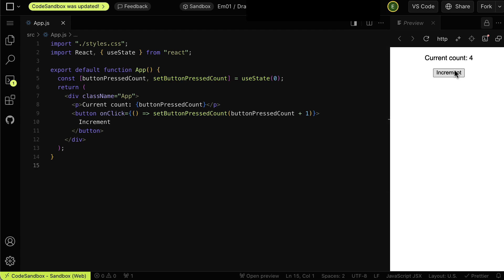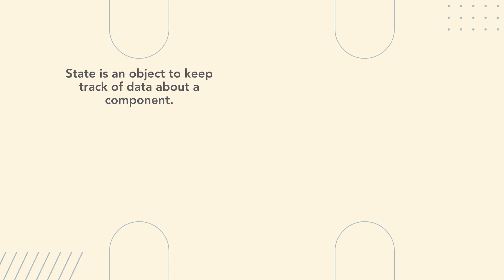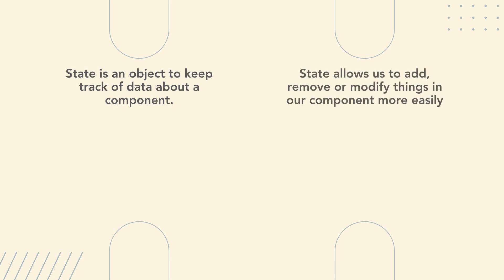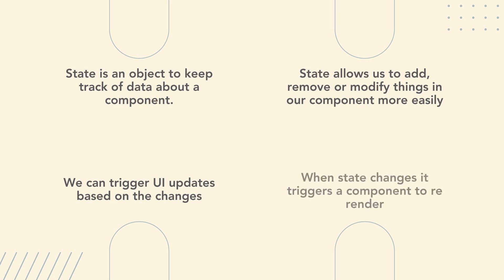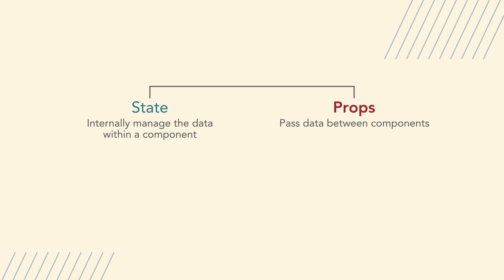So to wrap up this video, let's look at what we have learned. State is an object used to keep track of the data about a component. By using State, we can add, remove, or modify things in our component more easily, and then trigger UI updates based on these changes. When the state changes, it causes the component to re-render. There is a distinct difference between State and Props, another core React concept. Props let us pass data between components, whereas State lets us internally manage the data within a component.